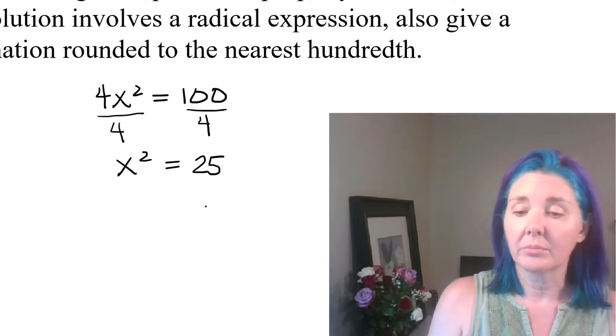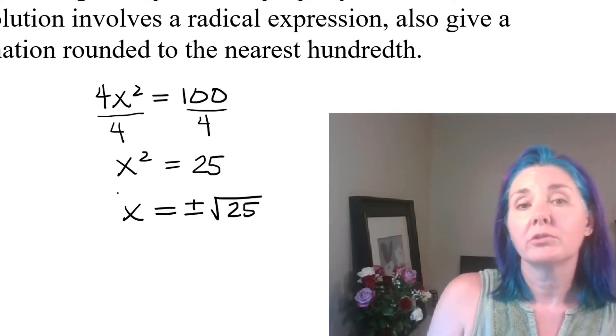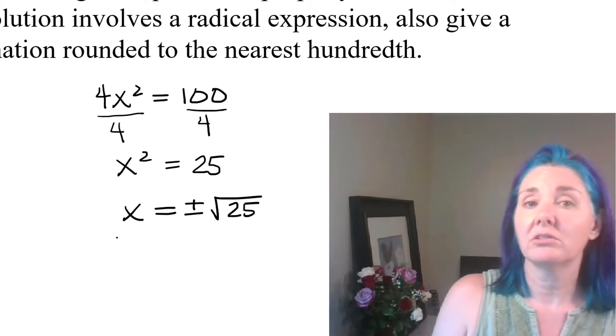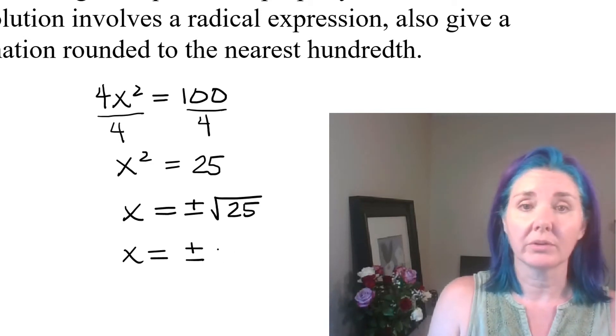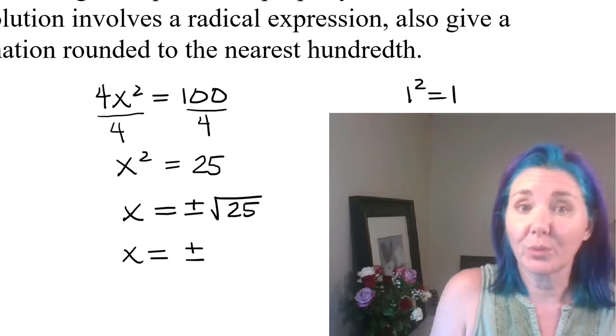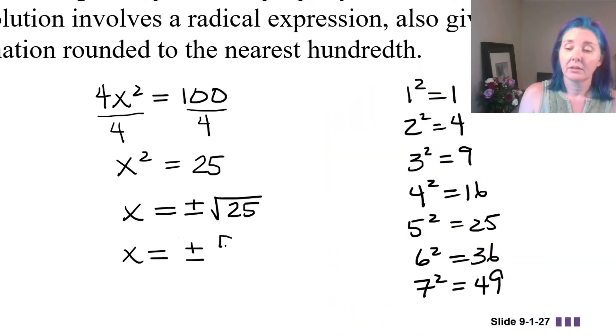Then by the square root property, that would mean that x would have to be plus or minus the square root of 25. Remember, squaring a number and taking the square root, those two operations reverse each other. So that would mean that x is either the positive or negative version of the square root of 25. But what number squared is equal to 25? The number 5. So we have plus or minus 5. In other words, the solutions to this equation are either 5 or negative 5. Either of those two values would make the equation true.